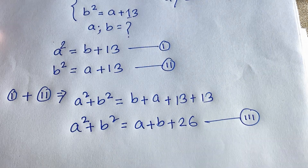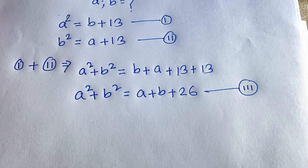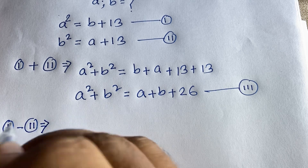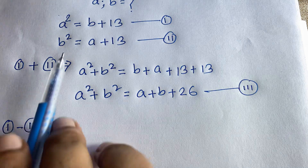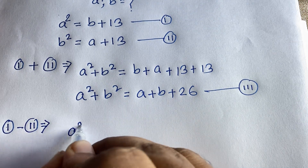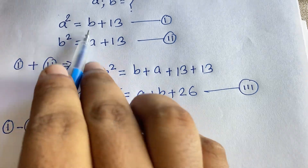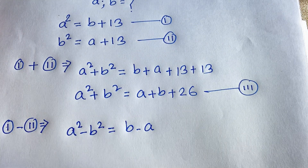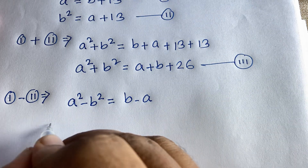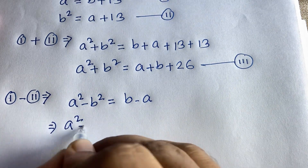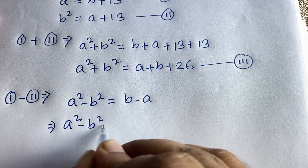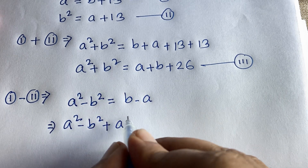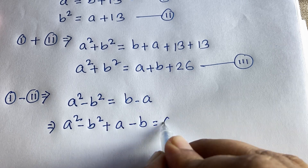Now I subtract the second equation from the first equation. We get a squared minus b squared on the left, and b minus a, with 13 minus 13 equal to 0 on the right. So a squared minus b squared minus a plus b is equal to 0. Moving the negative a to the left gives a squared minus b squared plus a minus b equals 0.